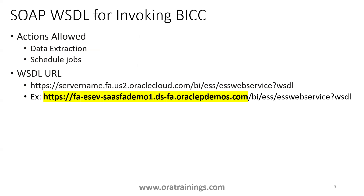The first thing is what actions this SOAP WSDL for BICC provides. The actions generally allowed are: you can extract data as well as schedule a job. You can observe the WSDL URL here — the web service name has the prefix after the cloud instance URL like: BI slash ESS ESS web service question mark WSDL. In this example, this is the cloud instance URL followed by the BI ESS ESS web service WSDL.